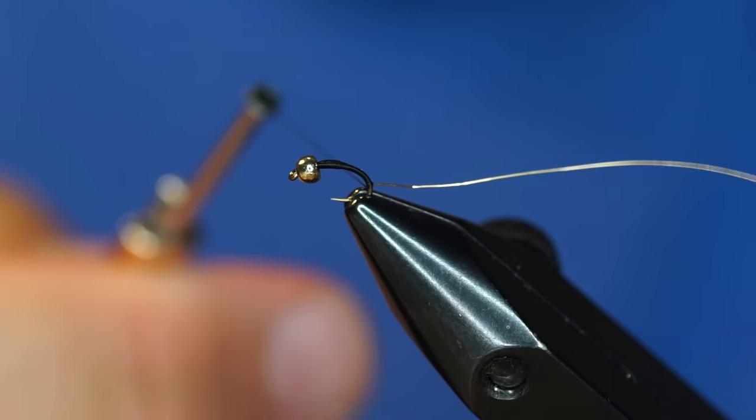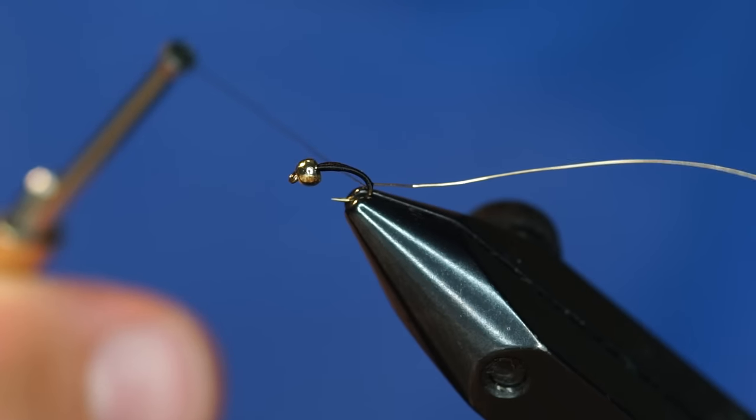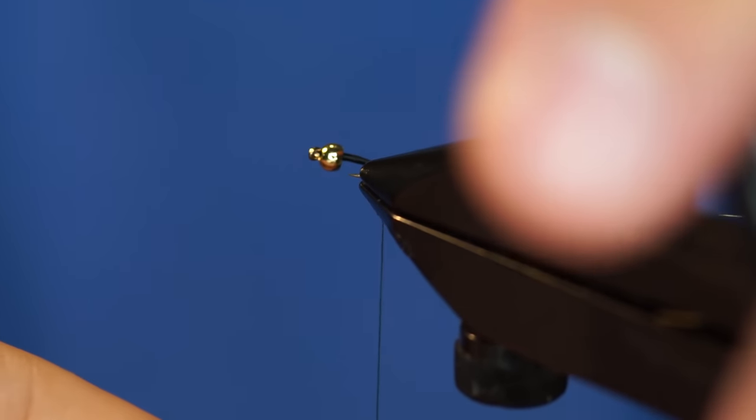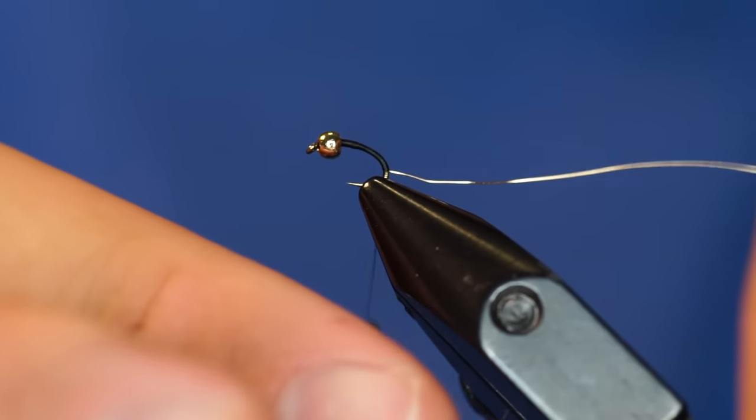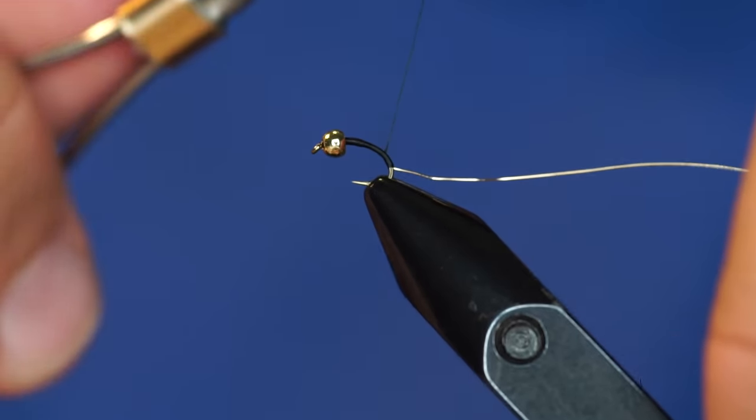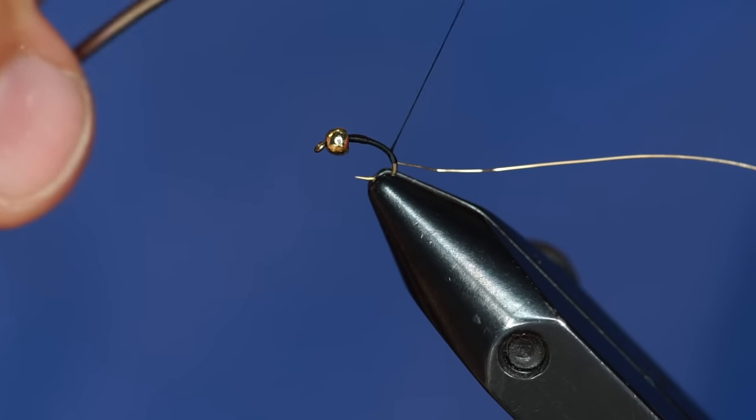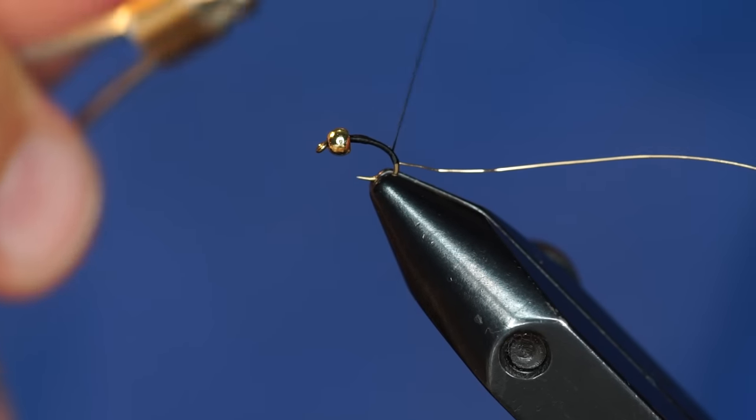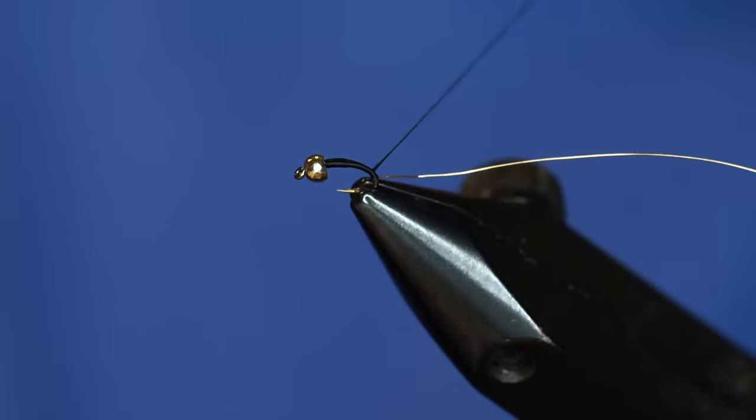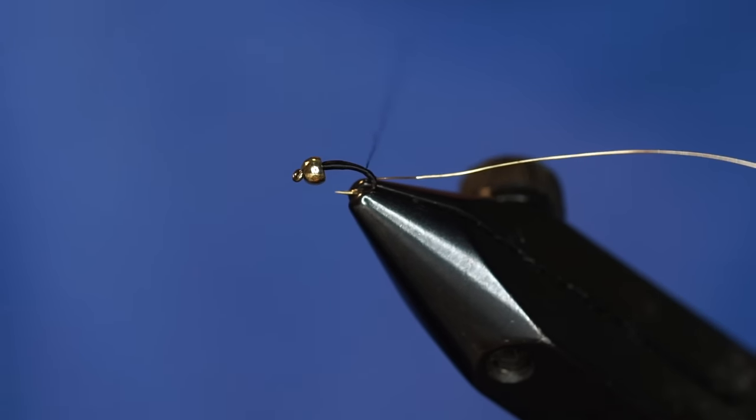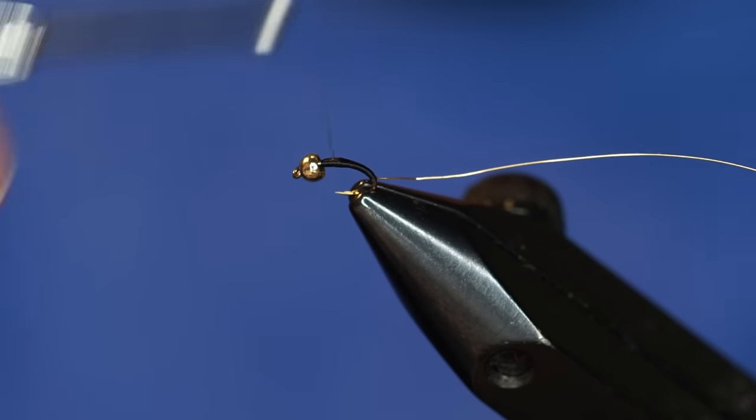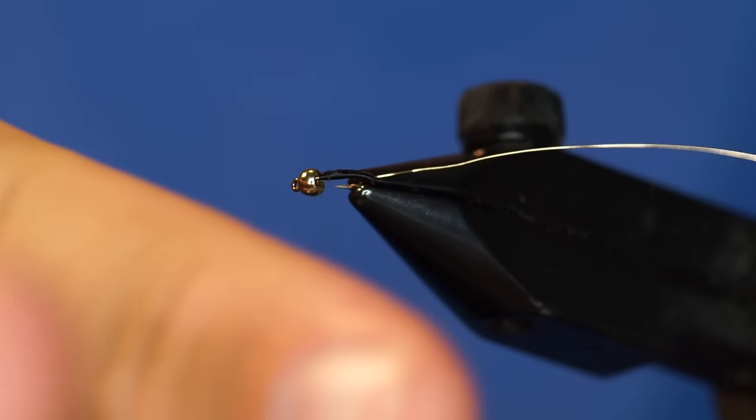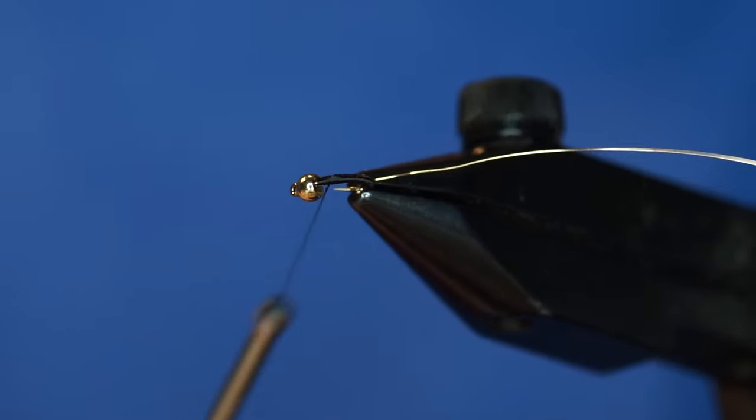I'm going to take my thread and twist it counterclockwise because that takes all the twists out of the thread that I've put in from tying so far. That allows me to lay down a very smooth body, which I think is critical on this fly. It makes it look more clean because the thread is what shows. The thread is what builds the body of this fly.